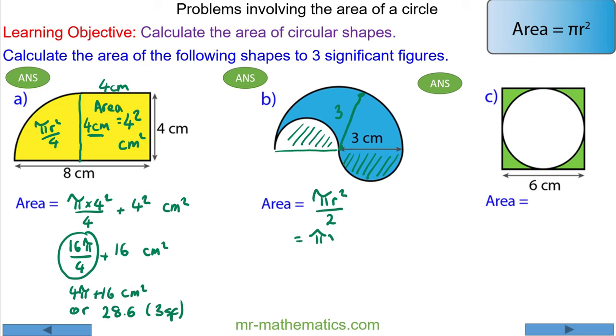So the area of the composite shape is pi times the radius squared divided by 2, which is 9 pi over 2 centimeters squared in terms of pi. Approximating it as a decimal to three significant figures, that would be 14.1 centimeters squared.